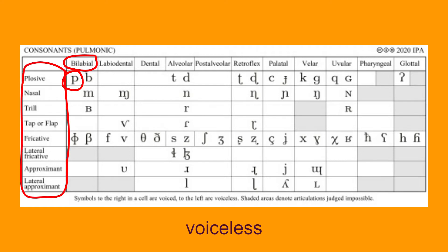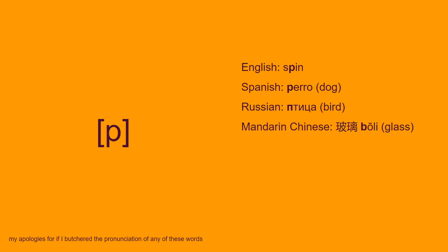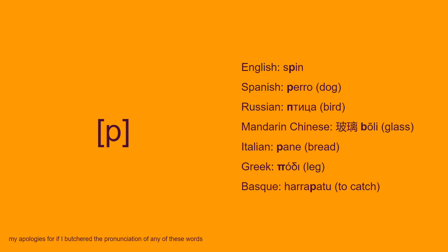Finally, we need to determine the manner of articulation. Looking at the chart, we can see that this sound is a plosive — this means we are blocking the vocal tract at the lips and then suddenly releasing it when pronouncing the sound. Hence, you should pronounce something like [p]. This sound is actually pretty common amongst the world's languages. You can find it in words like English 'spin', Spanish 'berro', Russian 'ptitsa', Mandarin Chinese 'bō', Italian 'pane', Greek 'bozi', Basque 'arrapatu', Welsh 'siop', and so on.